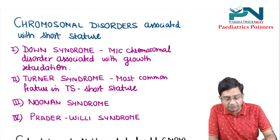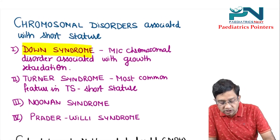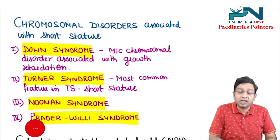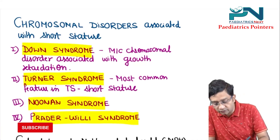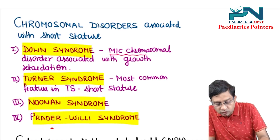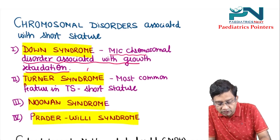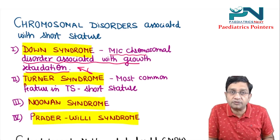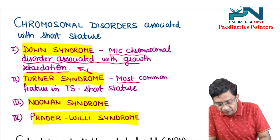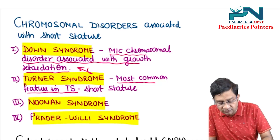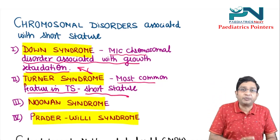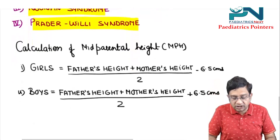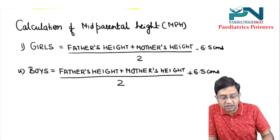Moving on to chromosomal disorders associated with short stature, there are four you should remember: Down syndrome, Turner syndrome, Noonan syndrome, and Prader-Willi syndrome. Down syndrome is the most common chromosomal disorder associated with growth retardation. In Turner syndrome, the most common clinical feature is short stature.